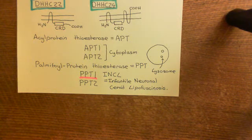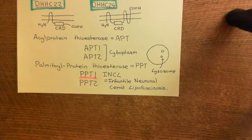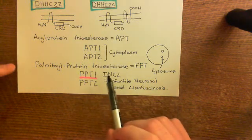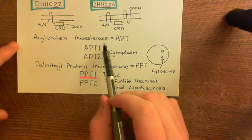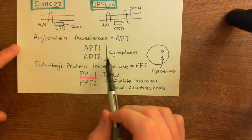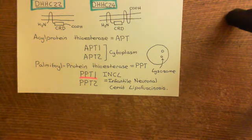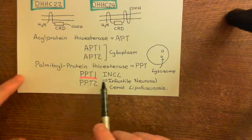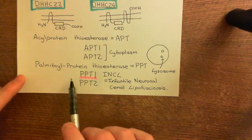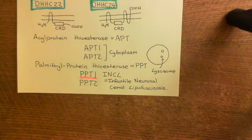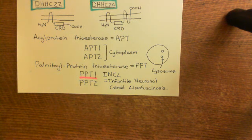We've now seen the enzymes which put S-palmitoyl groups onto proteins, and the two classes of enzymes which take them off. The acylprotein thioesterases (APTs) are within the cytoplasm and are probably involved in regulation of signaling pathways through cycling of palmitoyl groups on proteins in signaling cascades. The palmitoyl protein thioesterases are within lysosomes, and specifically PPT1 is very important in removing palmitoyl groups from proteins to be degraded within the lysosome, allowing their complete degradation. That concludes our discussion of palmitoylation.